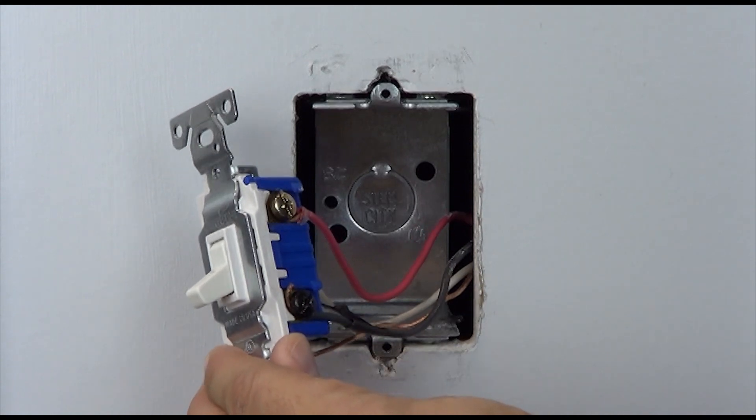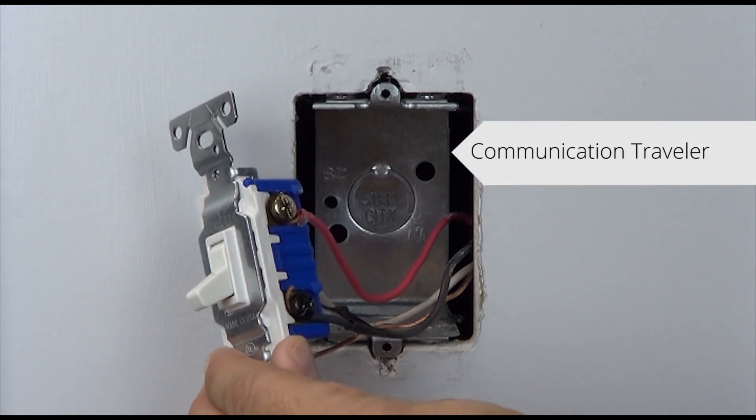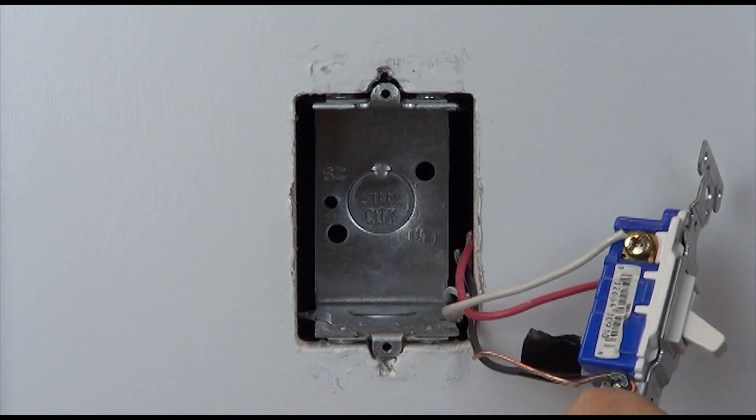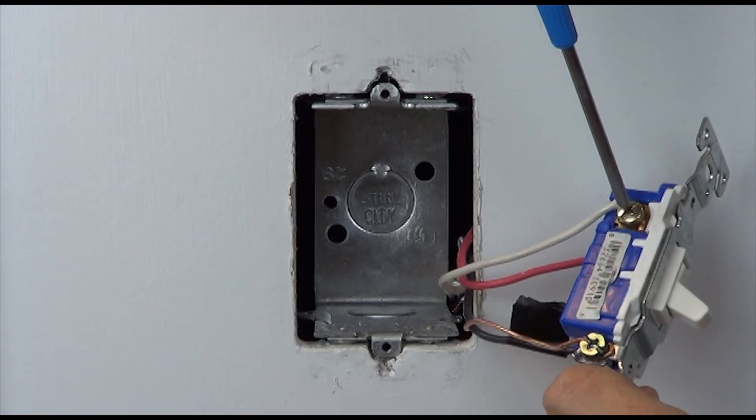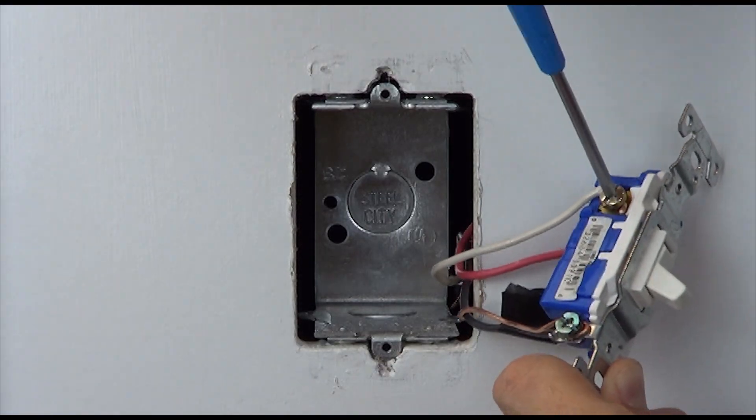Now determine which wire is tied to the blue screw terminal in the other location. Leave this wire connected to the switch and leave the ground connected to the green screw terminal, but remove the remaining two wires.